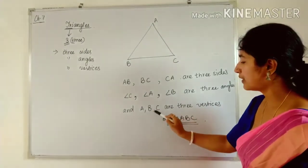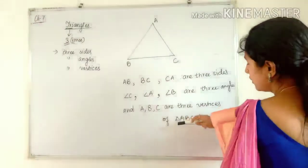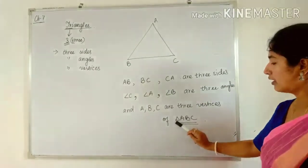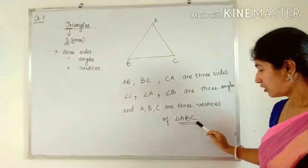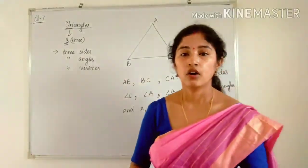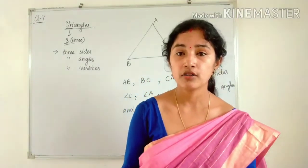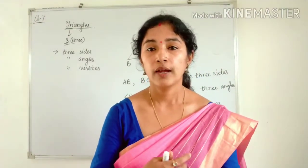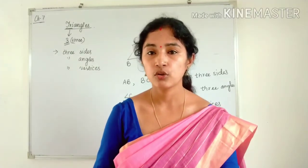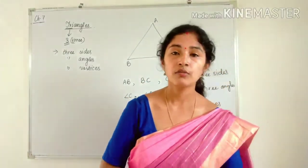Next are the vertices. A, B, C are the vertices — no symbol is needed before A, B, and C. For vertex or vertices, we represent using only one alphabet. A, B, C are the three vertices of triangle ABC. Triangle ABC is denoted with the triangle symbol followed by A, B, C. You have to use three alphabets for denoting a triangle. Also, the area of a triangle — you already know — is half times base times height.